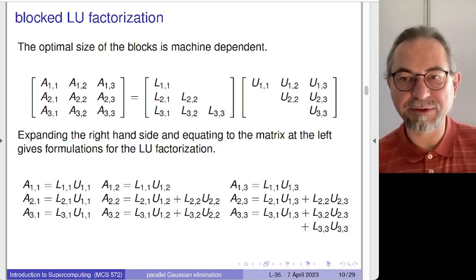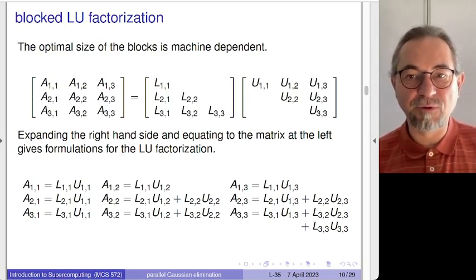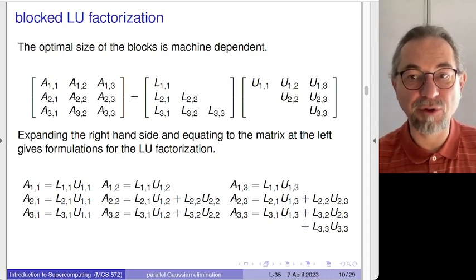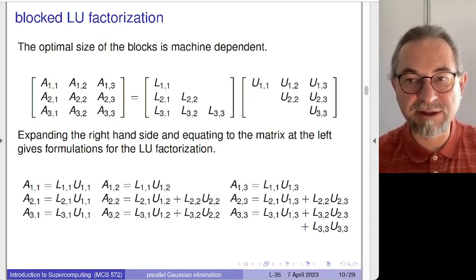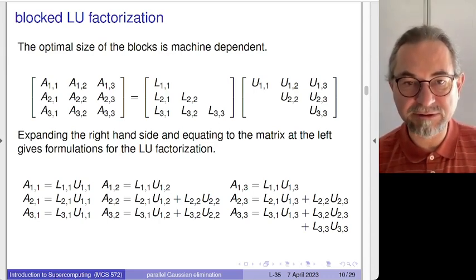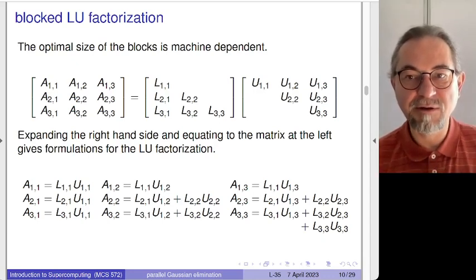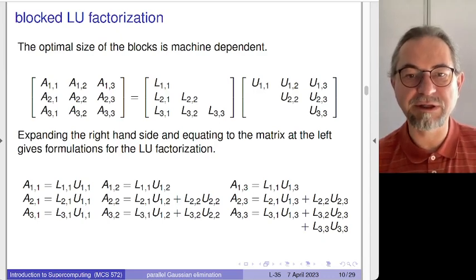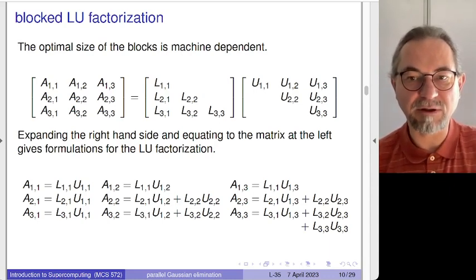We can read the formulas column by column or row by row. After computing L11 we can proceed to compute U12. This is where task graphs come in — introduced earlier in the lecture and in this part of the course. With a task graph, there is a lot of parallelism. You don't need to restrict yourself to a column-wise or row-wise reading; there is much more parallelism in this tile-wise computation.